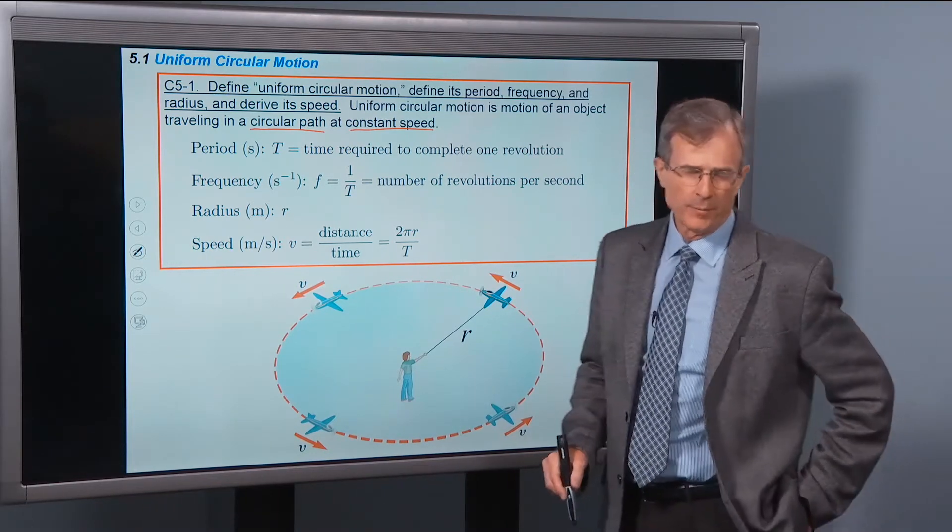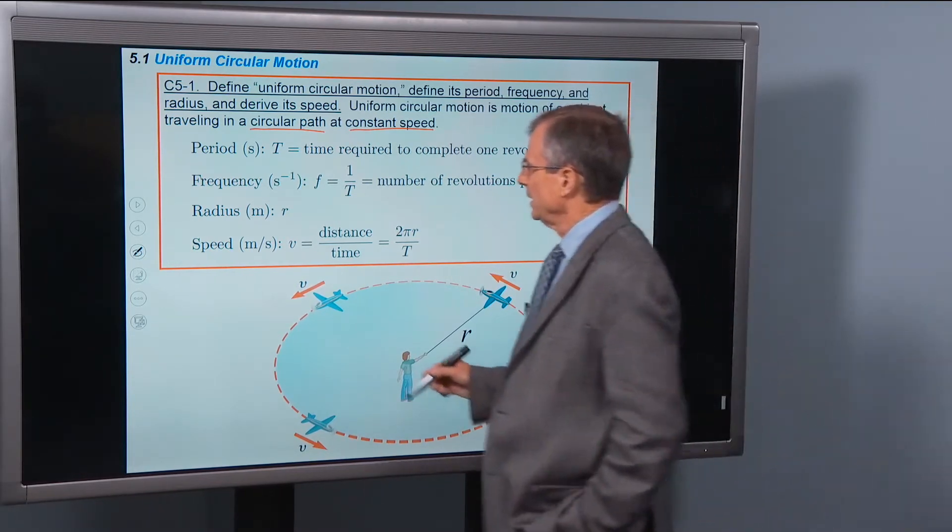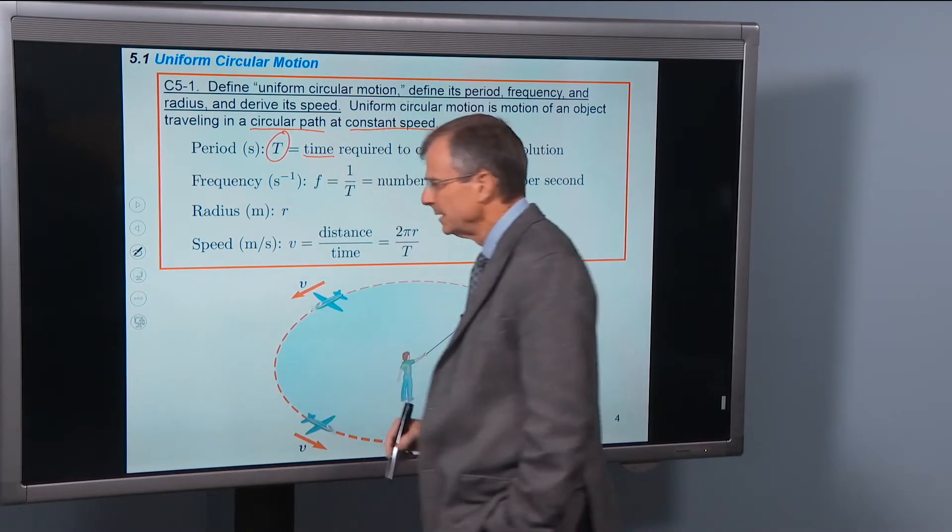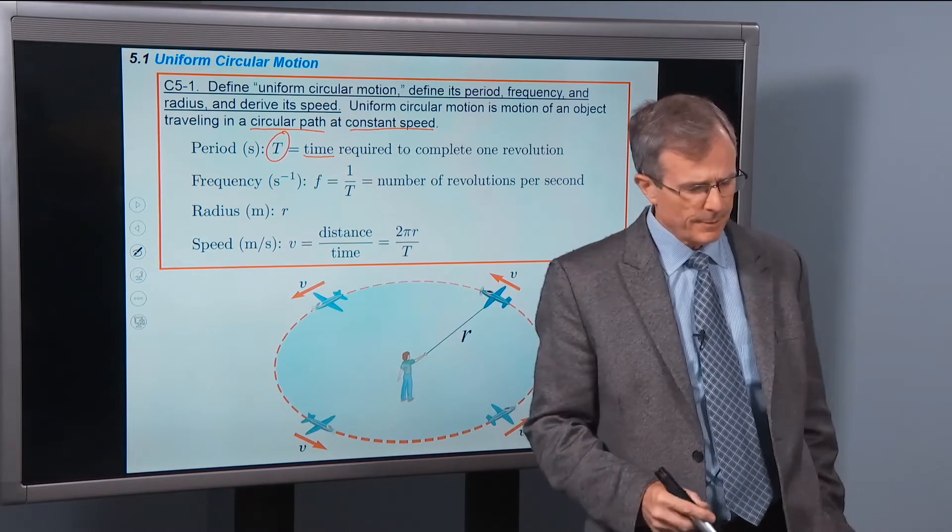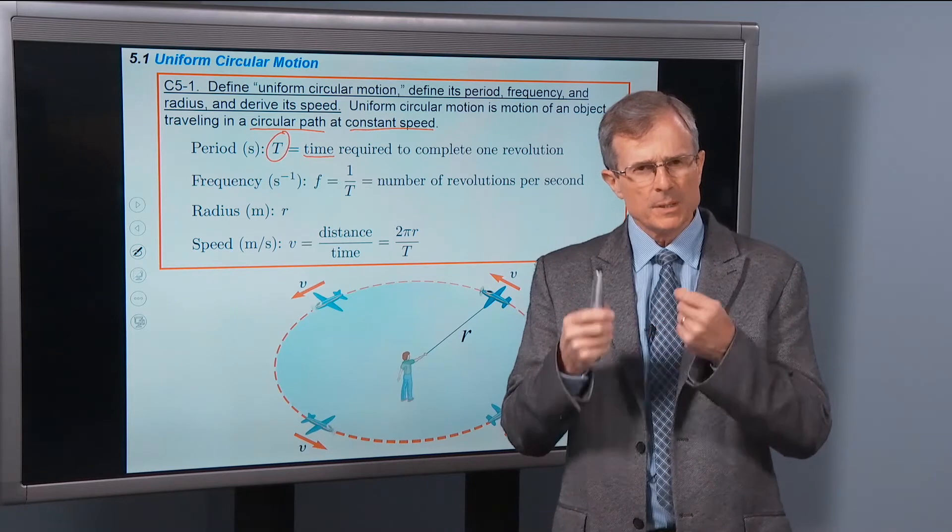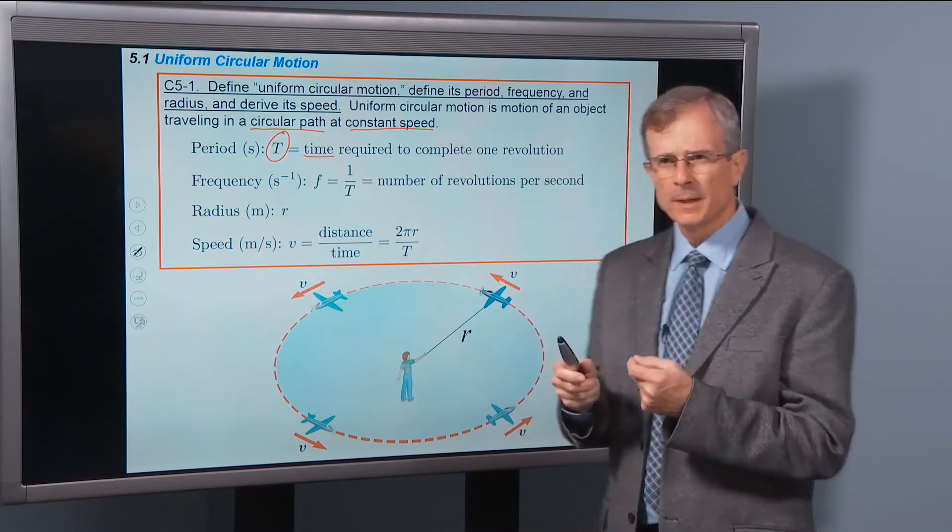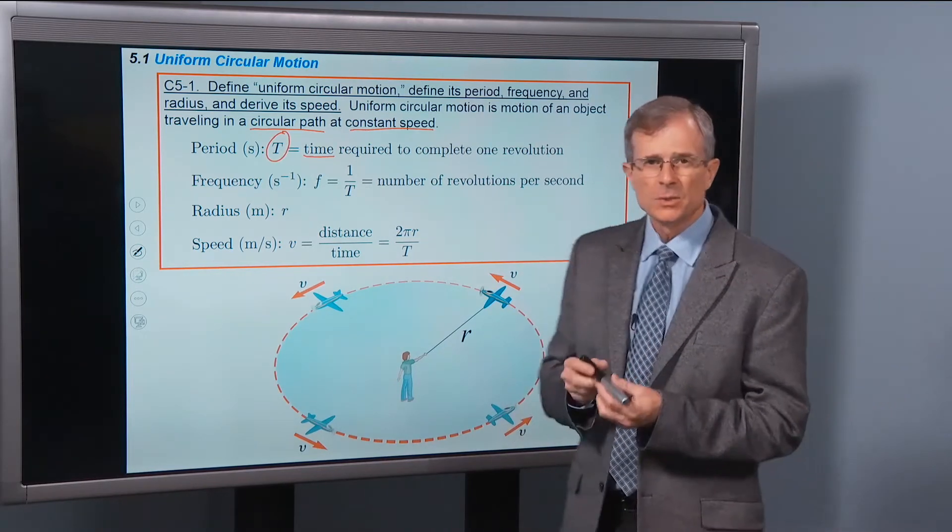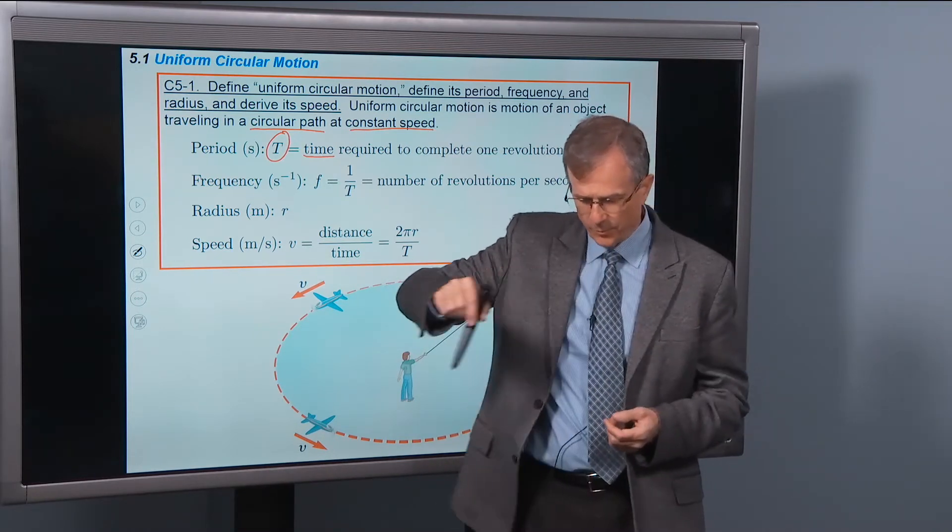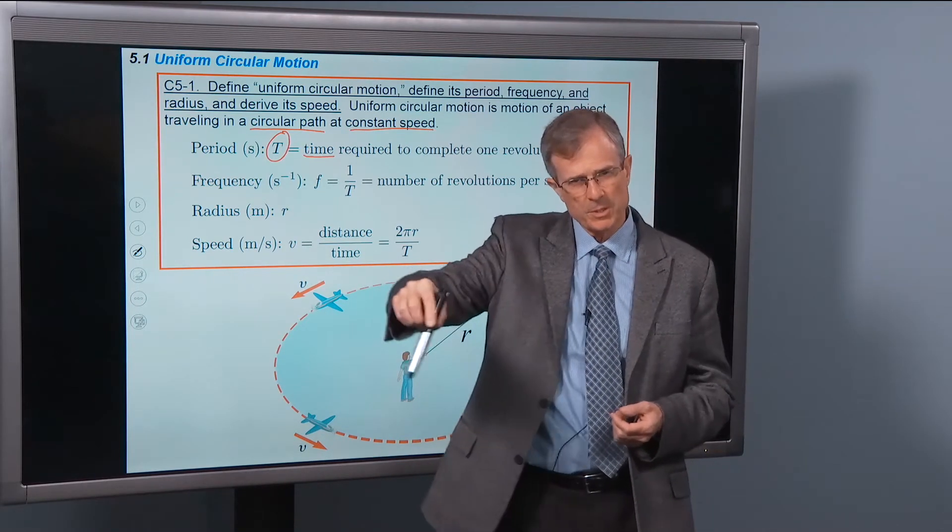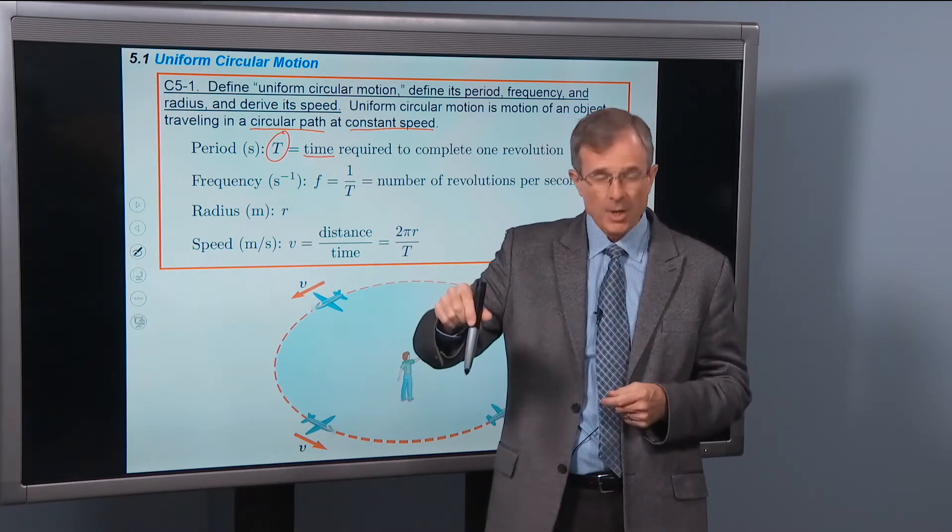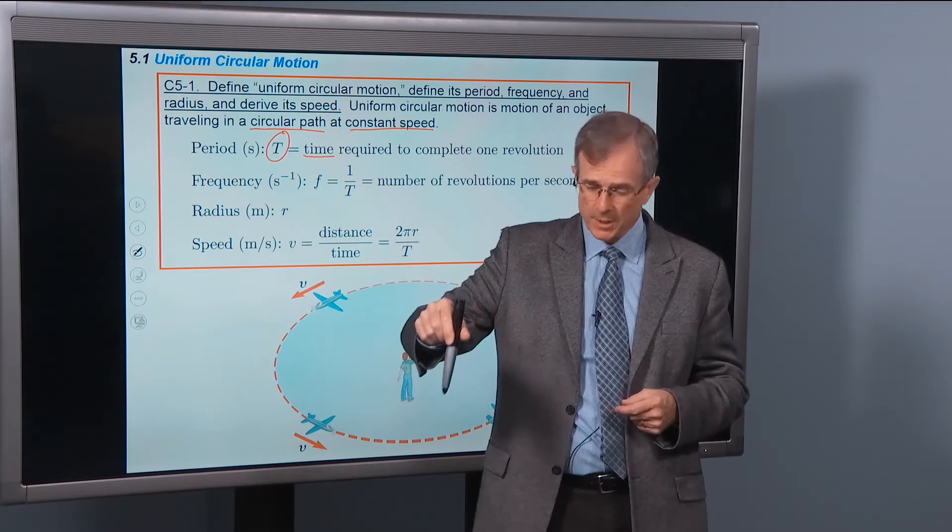The period of the motion is denoted by T, and it's a time. So students sometimes confuse period with frequency. The period is the time it takes for one complete revolution. So like, for example, in the video, when the foam ball was going around in a horizontal circle, we could have taken our stopwatch, started the stopwatch when the ball was here.